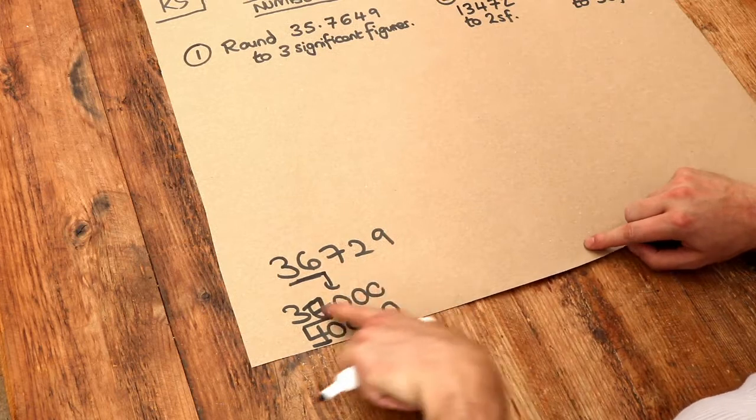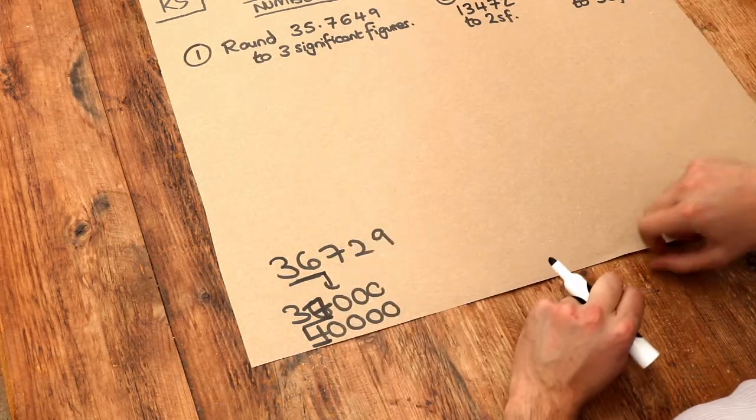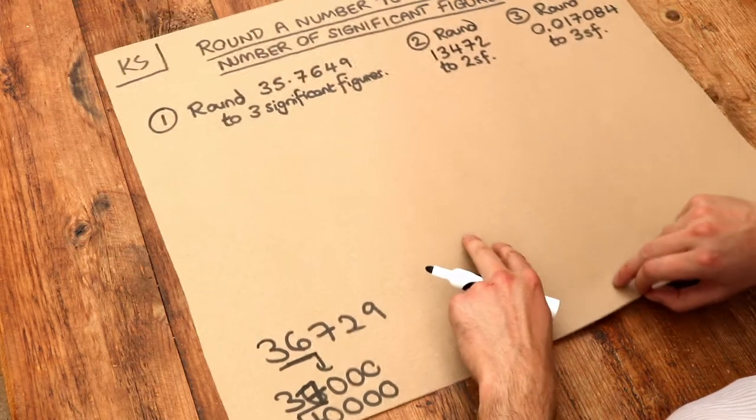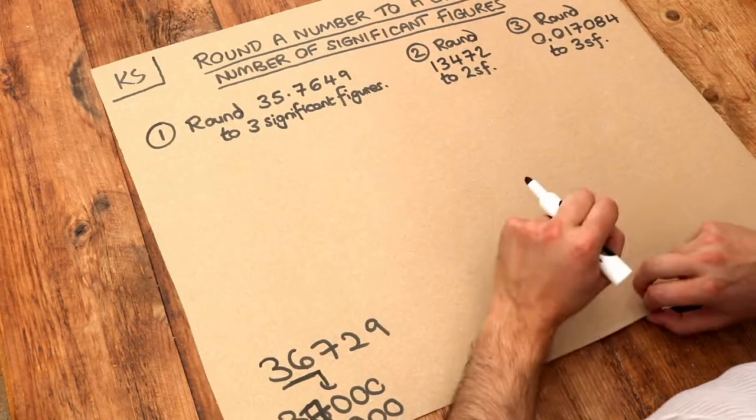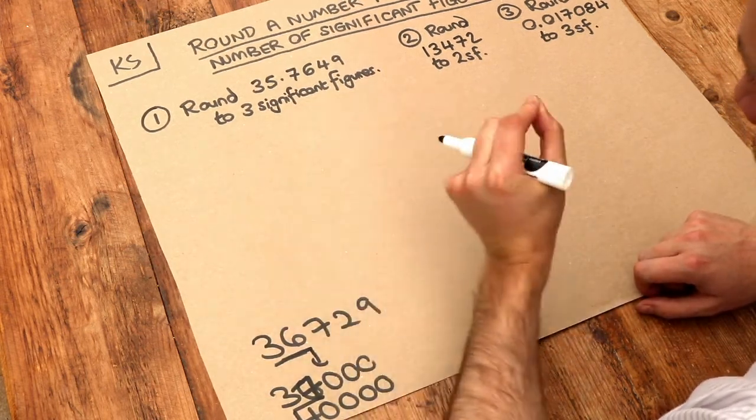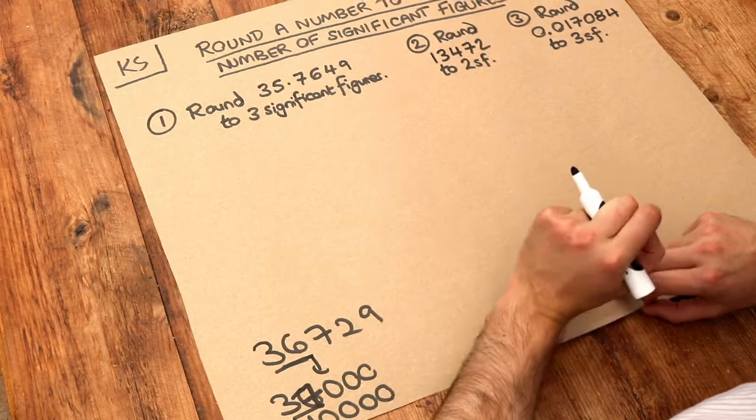And we would have said that we've rounded this number to two significant figures. Whereas we rounded this number to one significant figure. And it's quite similar to how we round to a certain number of decimal places. It's just that we start counting the figures we want to keep from the first non-zero digit.